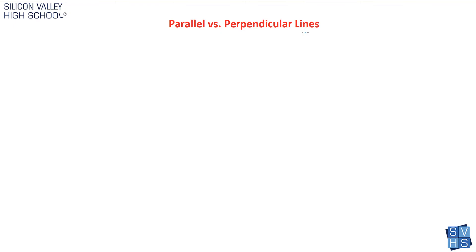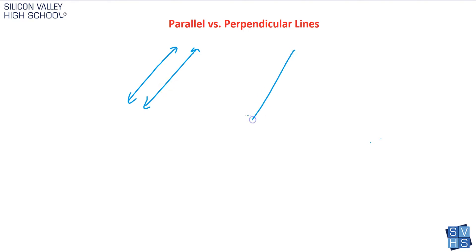Whenever we talk about parallel versus perpendicular lines, there's one way to visually understand immediately the difference. When you look graphically at two lines that are parallel, they go in the same exact slope, the same direction forever, and they never cross — that was a hint: they have the exact same slope. Perpendicular lines are lines that do cross; in fact, they cross at exactly 90 degrees. They're known as a corner — a perfect right angle.